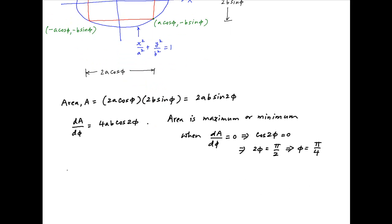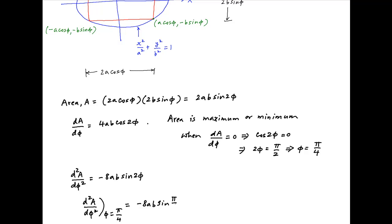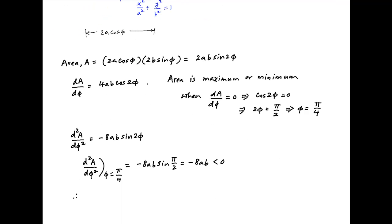The second derivative of A with respect to φ is equal to -8ab sin 2φ. At φ = π/4, this equals -8ab sin(π/2), which is equal to -8ab, which is clearly negative. Therefore, the area of this rectangle is maximized when φ = π/4.